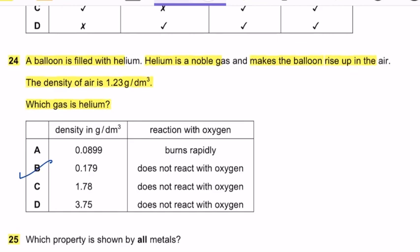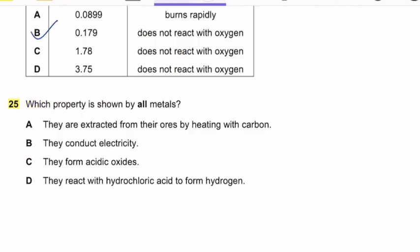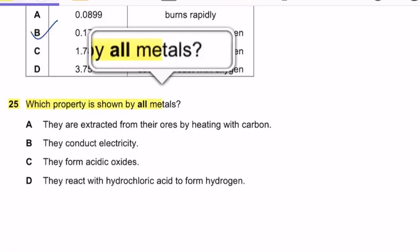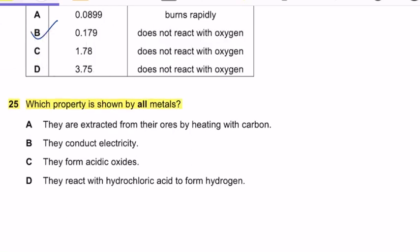Question 25: Which property is shown by all metals? Keep in mind — whenever the question asks about all metals, all metals show good electrical conductivity. So the best answer is: they conduct electricity.